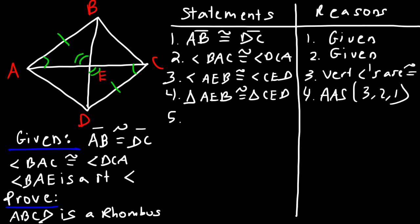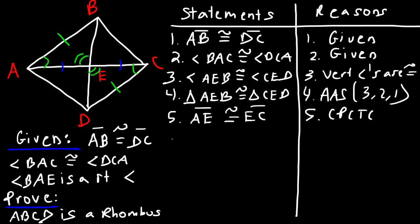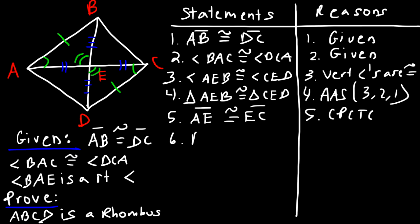Now that we've shown those two triangles are congruent, their corresponding parts must be congruent as well. Therefore, AE is congruent to EC — that's by CPCTC. We can also say that BE is congruent to ED, since they are corresponding parts of the two congruent triangles, also by CPCTC.